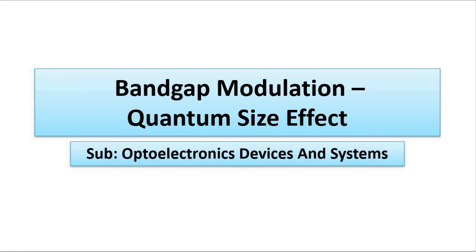Hello friends, welcome to Engineering Tutorial. We will continue our discussion related to optoelectronics devices and systems. We are discussing about band gap modulation — the adjustment of the forbidden energy gap in semiconductors for optoelectronics applications. We have discussed various methods, and in this video we will be discussing about the use of nanotechnology or the quantum size effect.